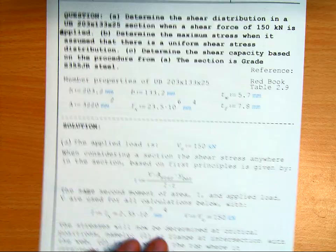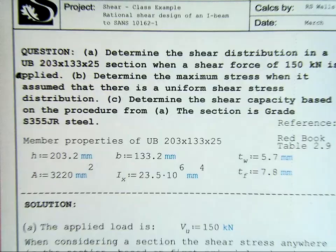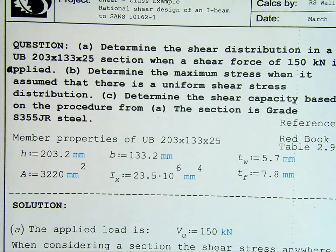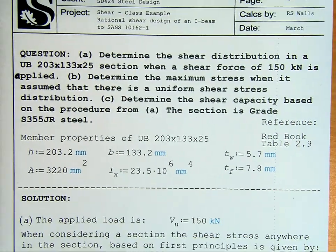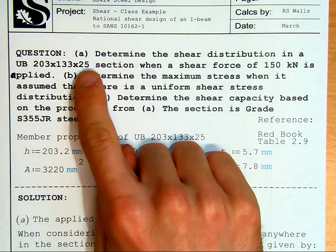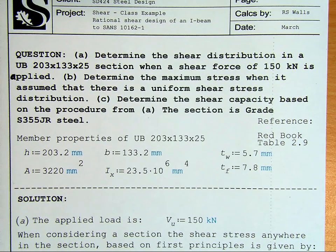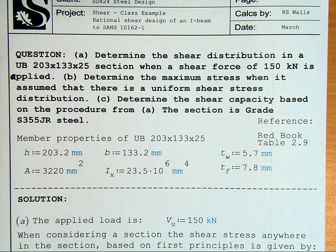Now, looking at the question and just seeing what we need to do, our question: determine the shear distribution in a UB203-13325 section when a shear force 150 kN is applied.